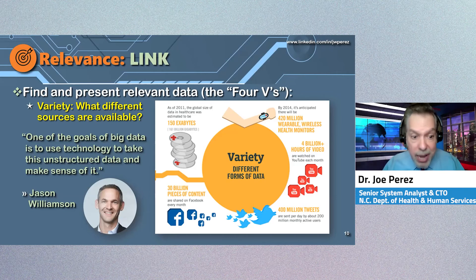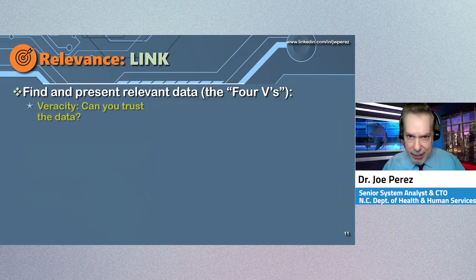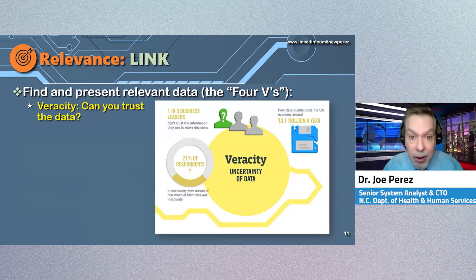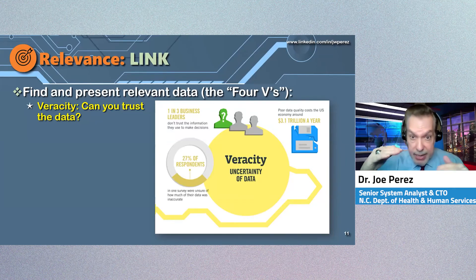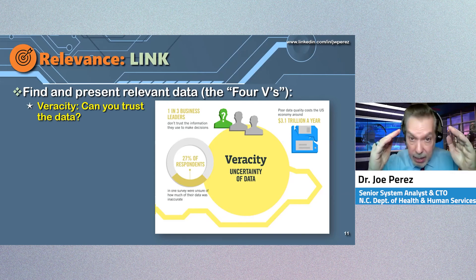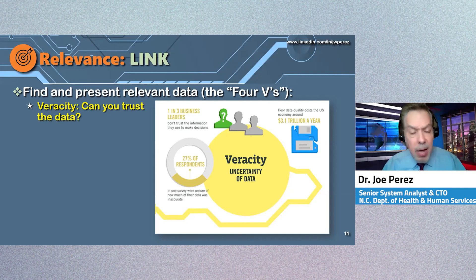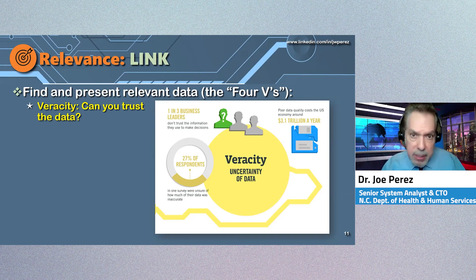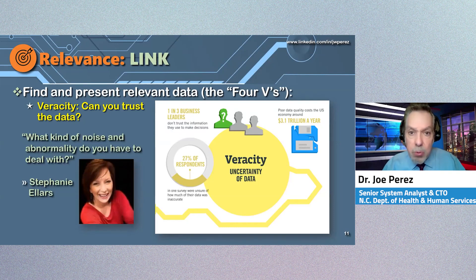The fourth V is veracity — is this data trustworthy? Can you count on it to be true? With usual business analytics, where volume and variety are smaller, the organization tends to have greater control over the data and, as a result, greater veracity. But with big data, greater volume and variety brings a greater likelihood of uncertainty. It's not implying dishonesty — it's just the nature of the beast that comes with more and more unstructured data. Web publisher Stephanie Ellers warns: what kind of noise and abnormality do you have to deal with?